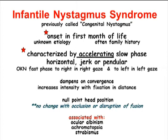Infantile nystagmus syndrome is often associated with ocular albinism, achromatopsia, and some forms of strabismus.